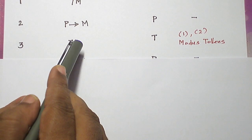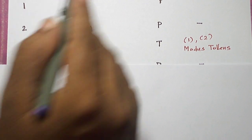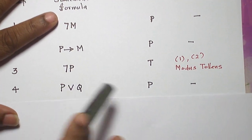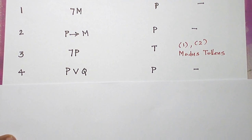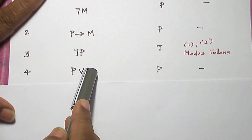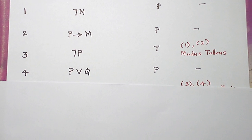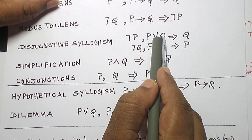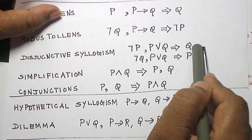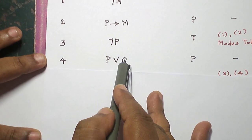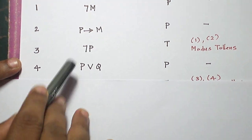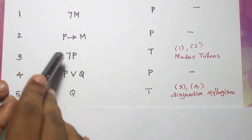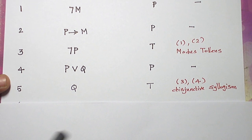Since we ended up with negation P, let us introduce a premise that involves P. P∨Q is the next premise that involves P, so I introduce it using rule P with no justification needed. Combining negation P and P∨Q, we apply disjunctive syllogism: with an OR connective and negation of one variable, the other variable becomes the conclusion. So Q is derived using rule T by combining steps three and four with disjunctive syllogism.